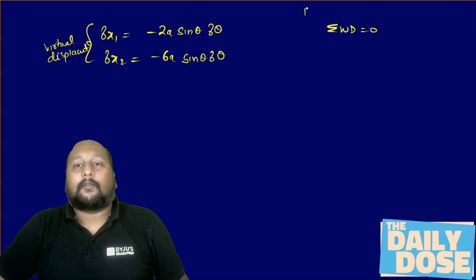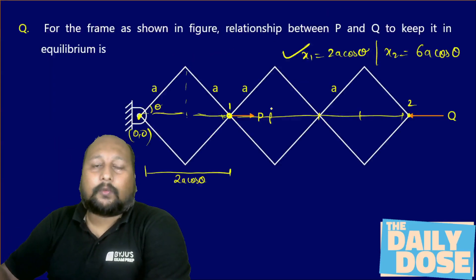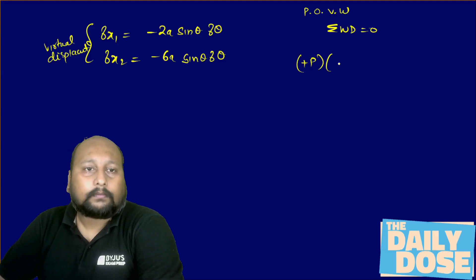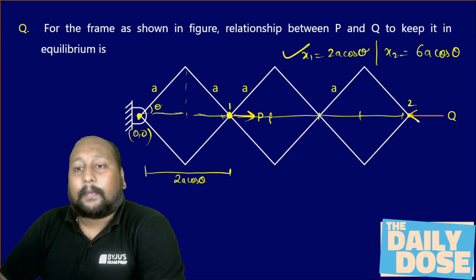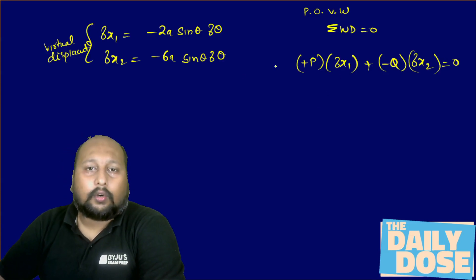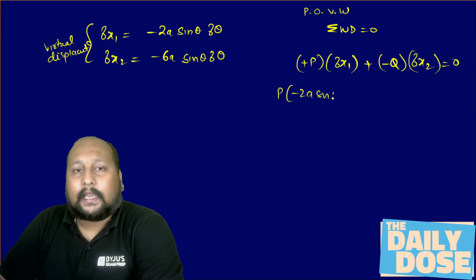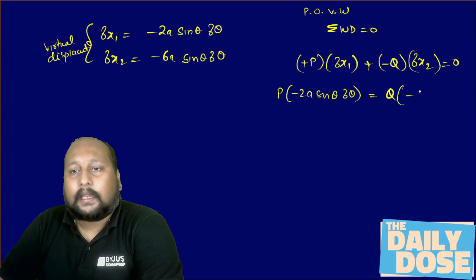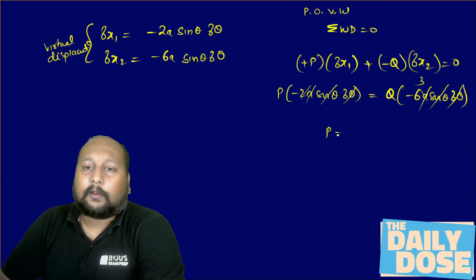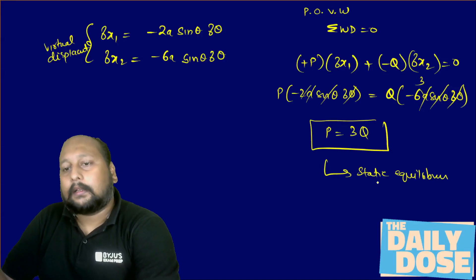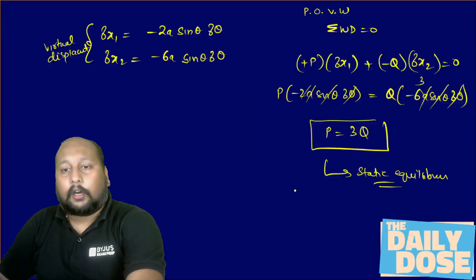Now apply the Principle of Virtual Work. Force P acts in the positive x-direction at point 1: +P·δx₁. Force Q acts in the negative x-direction at point 2: −Q·δx₂. Setting the total equal to zero: P·(−2a·sinθ·δθ) − Q·(−6a·sinθ·δθ) = 0. Cancelling δθ and a·sinθ: −2P + 6Q = 0, giving P = 3Q. So if P = 3Q, the entire system is in static equilibrium.